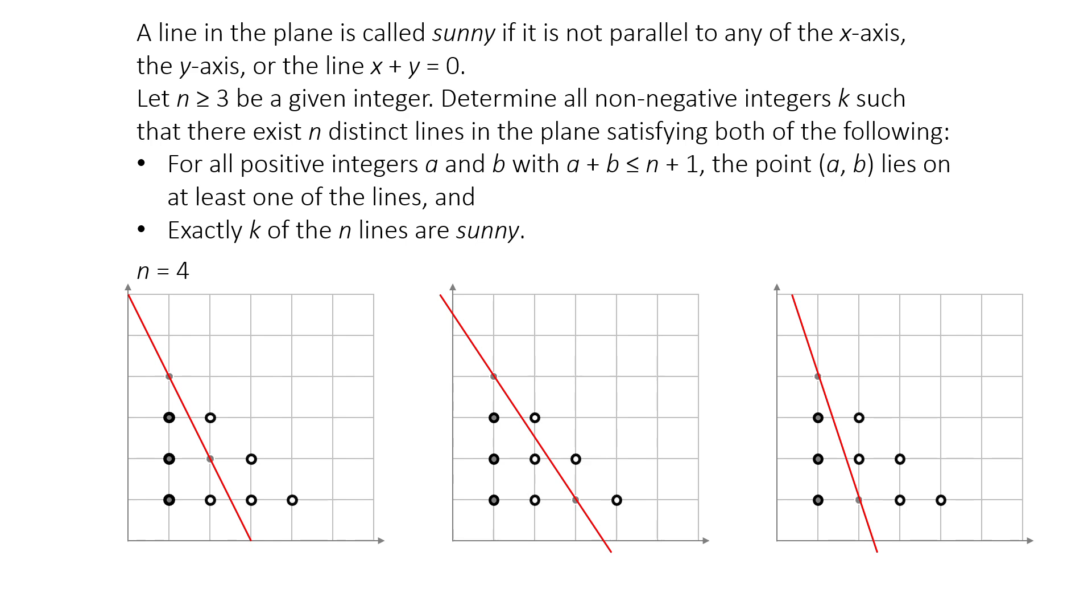In this diagram, the sunny line can pass through at most two points, but we need to cover eight points with three lines. This is a problem for us. To cover eight points with just three lines, at least two of those lines must pass through three or more points. Whenever we try to draw a line through three points, the line is either horizontal, vertical, or diagonal, which are not sunny. So now we've hit a contradiction.